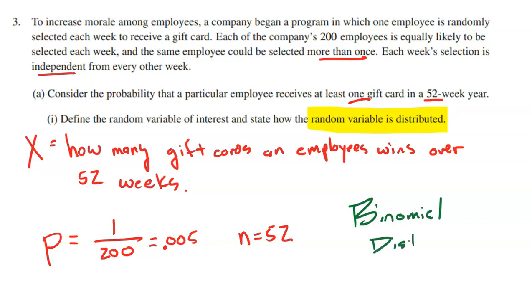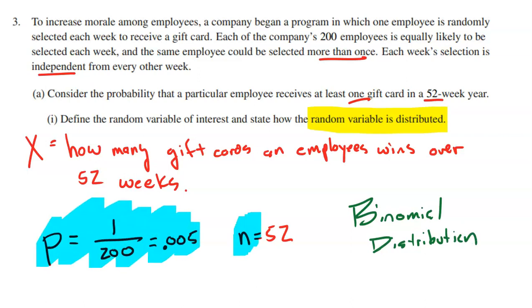Why is it a binomial distribution? For starters, we have the probability of success and the trial size. More specifically, every single week an employee is either going to win or lose — success or fail. The probability stays consistent at 1 out of 200 each week, and the trials are independent of one another. All three key details that make this a binomial distribution are satisfied.